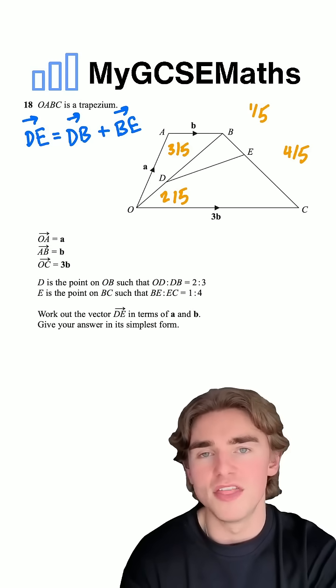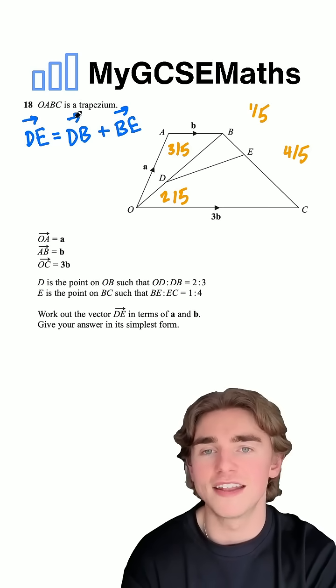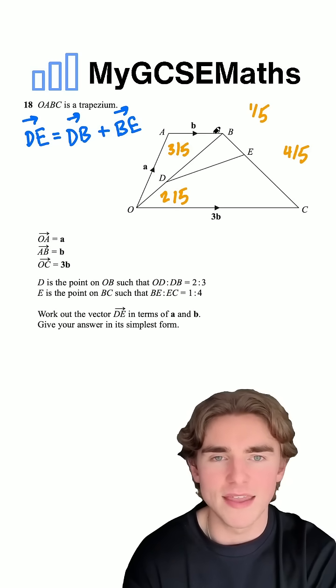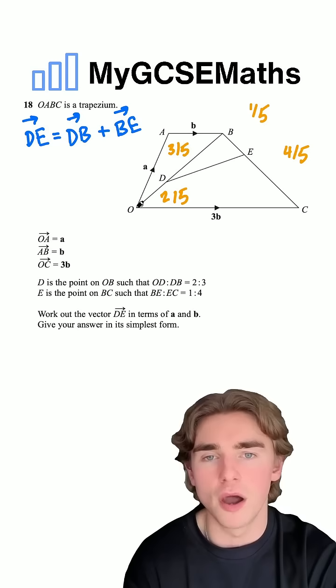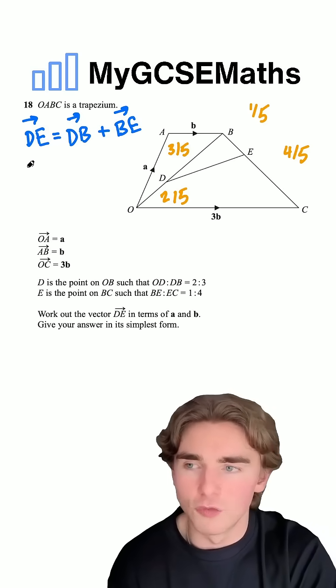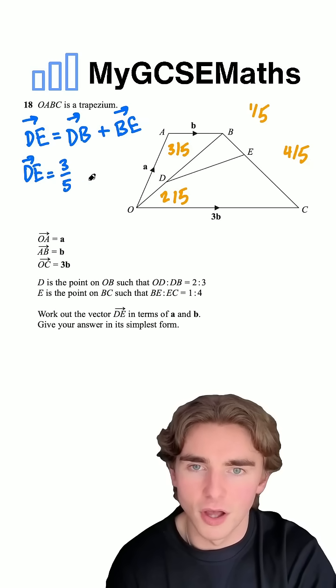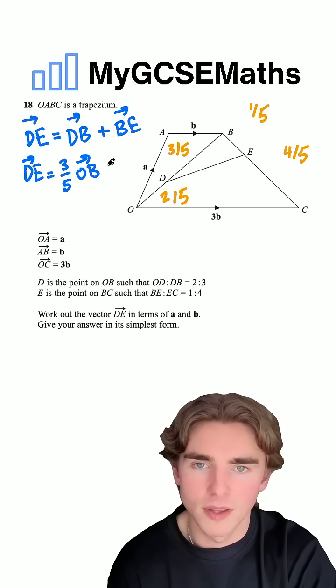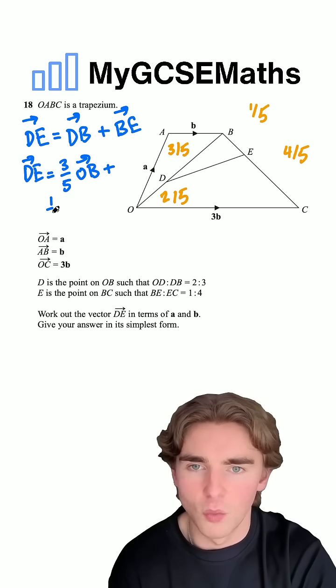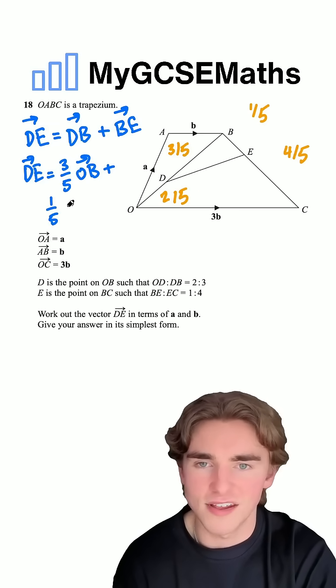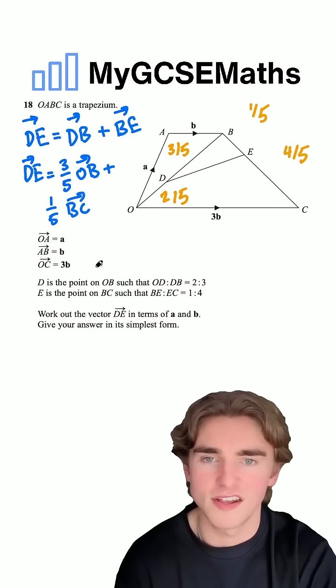Now, why is this helpful? This is going to allow us to rewrite DE in terms of two things that we can work out. DB is just going to be three-fifths of the overall vector from O to B. So we can write out that DE is equal to three-fifths of OB plus one-fifth of BC.